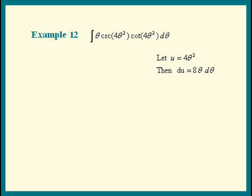Let's substitute the u's into our integral next. We have the integral of cosecant u cotangent u, and let's see what's left: theta times d theta. Theta times d theta, is that there? Yes, it is. Theta d theta is 1 eighth of du. We'll substitute that in.